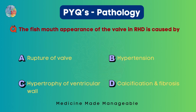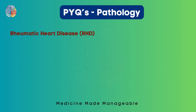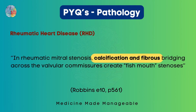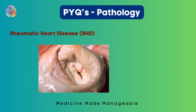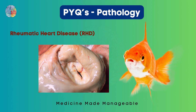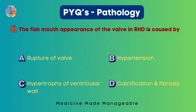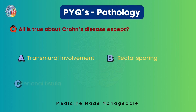Fish mouth appearance of the valve in rheumatic heart disease is caused by rupture of valve, hypertension, hypertrophy of ventricular wall, or calcification and fibrosis? Quoting directly from Robbins: calcification and fibrosis bridging across the valvular commissures create fish mouth stenosis. Comparing the image with a fish, you can see the similarity. The answer is calcification and fibrosis.